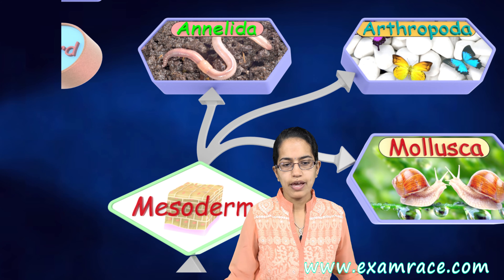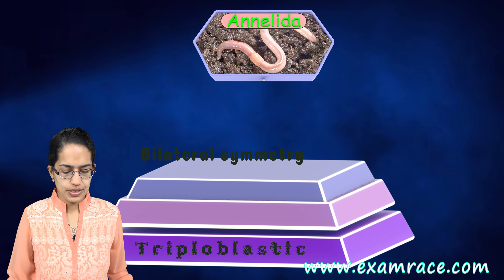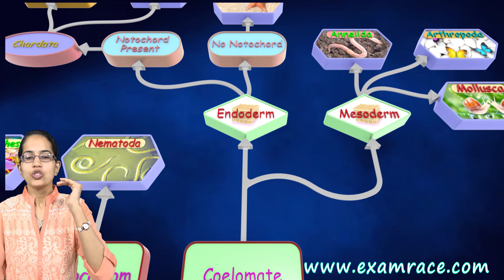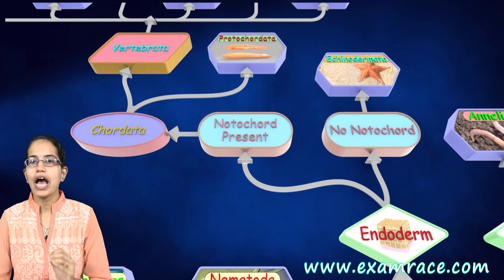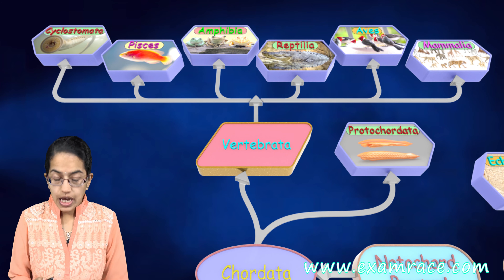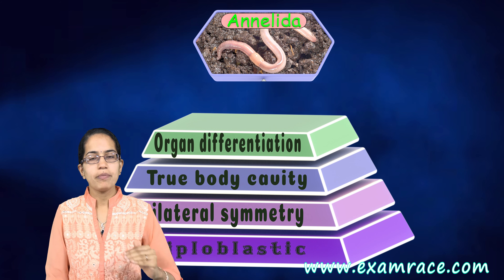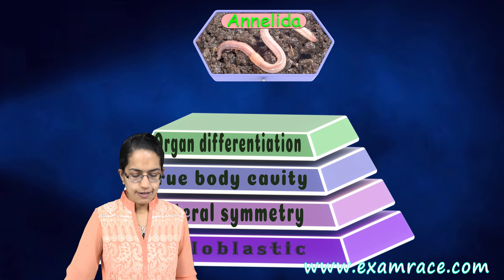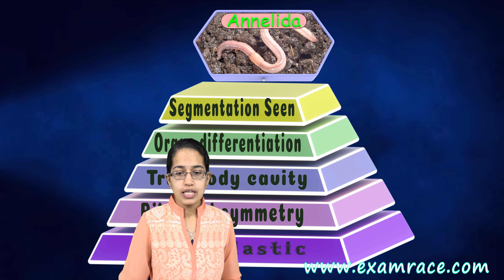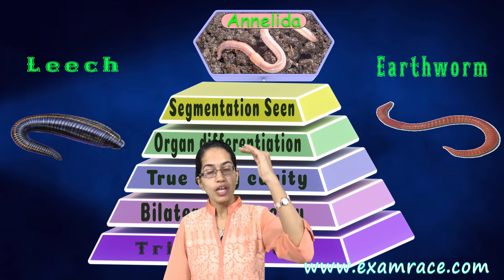Let's talk about these one by one. Annelida are triploblastic and bilaterally symmetrical, as we already said. They have a true body cavity. All those which are part of coelomate would have a true body cavity. Annelida also has organ differentiation since we are at the tissue level of differentiation. The body is segmented from top to bottom. A good example is earthworm, which has segments present. Leech is again segmented from top to bottom.